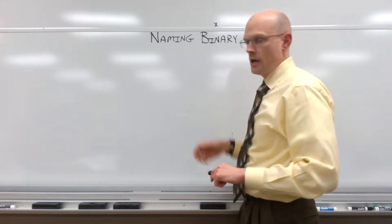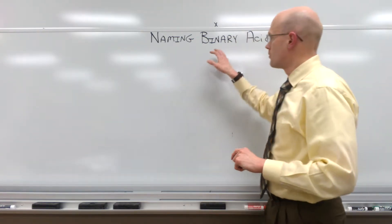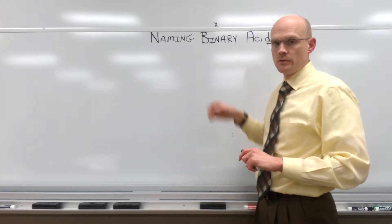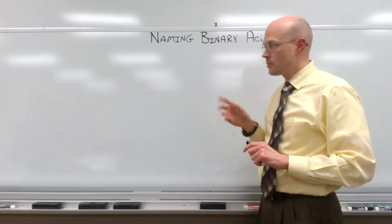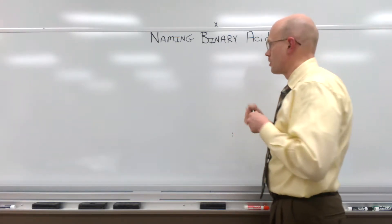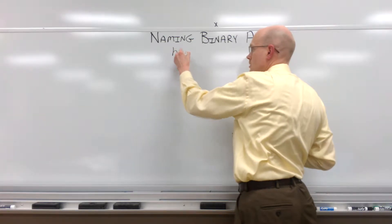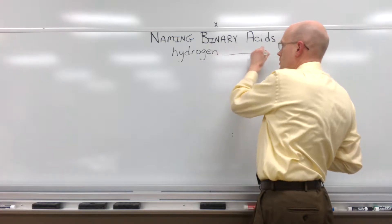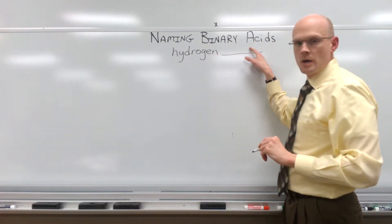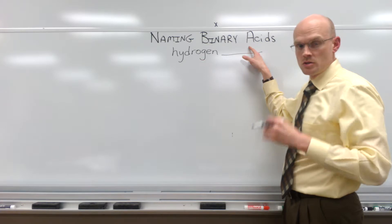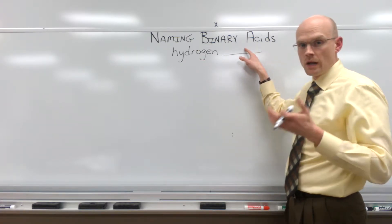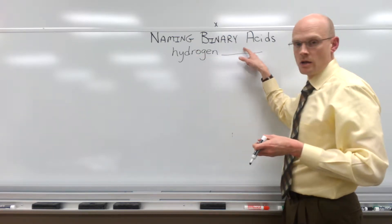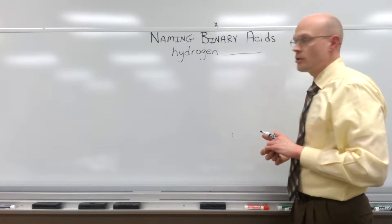Let's look at naming binary acids. A binary acid is an acid that is made up of two elements. What we are going to be looking for is a hydrogen followed by a nonmetal element such as sulfur, chlorine, or iodine — hydrogen followed by a nonmetal element: a binary acid.